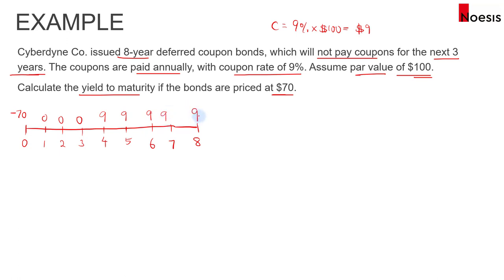when the bond matures or expires, there will be a payout of the par value, which is $100, so there will be another $100 there.